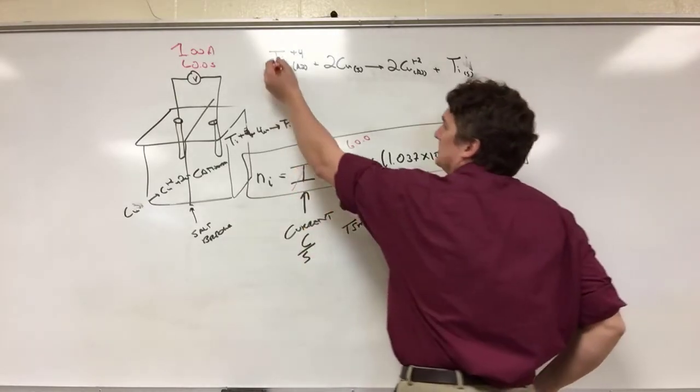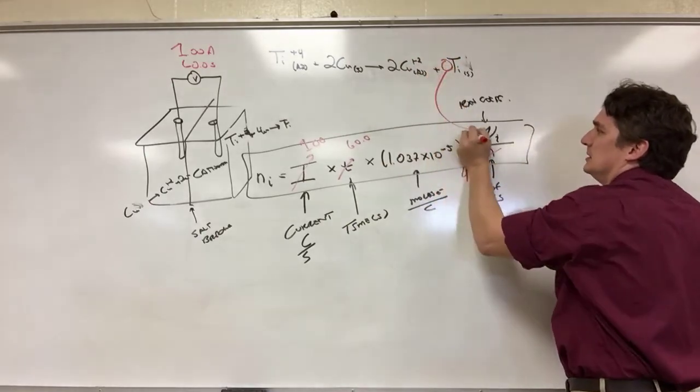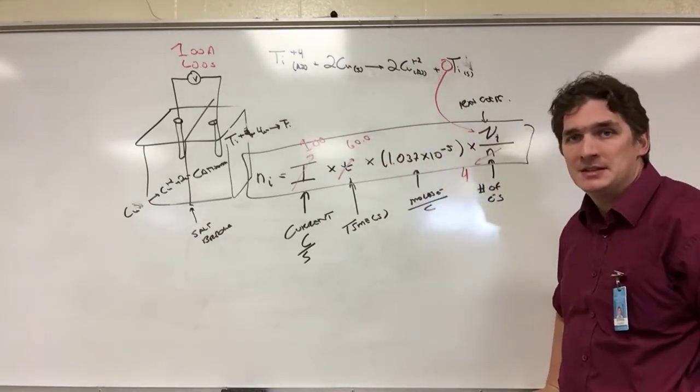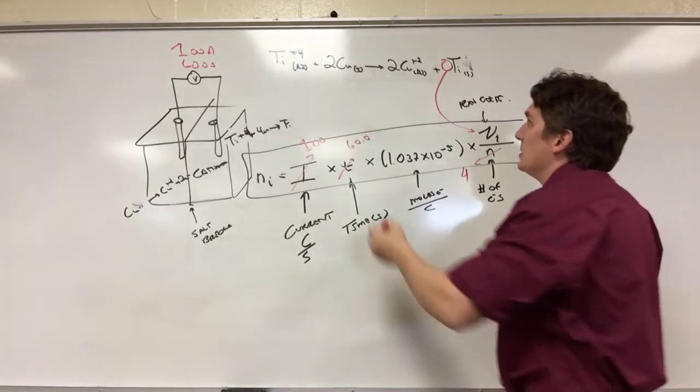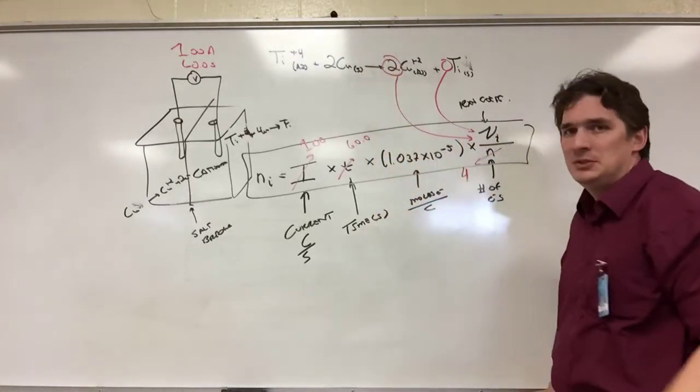If we want titanium, we go to the reaction and use the stoichiometric coefficient in front of it. In this case, it's one. If we want copper, we would put a two.